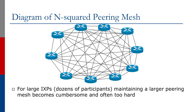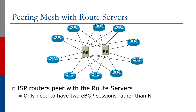The diagram shows the typical N-squared peering mesh. Every member added at the Exchange Point means that member will have to set up peering with every other member, if appropriate. For large Exchange Points, maintaining this large peering mesh becomes cumbersome and is often too hard. A better solution, as the diagram shows, is to implement route servers. There are two in the diagram and the ISP routers peer with the two route servers, meaning they only need two eBGP sessions rather than eBGP with every other member.